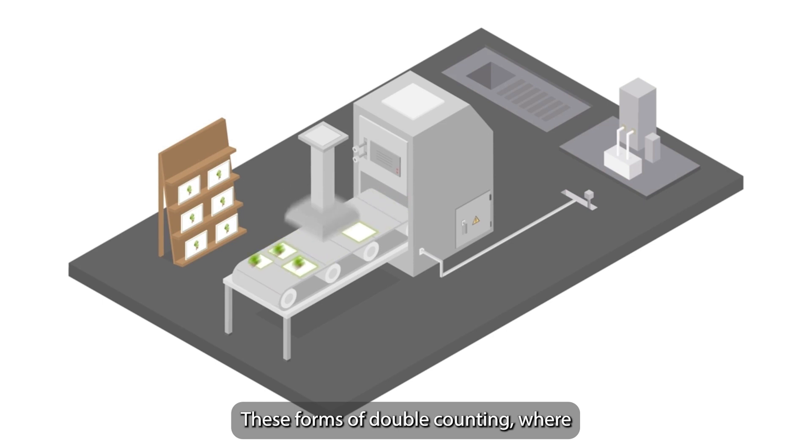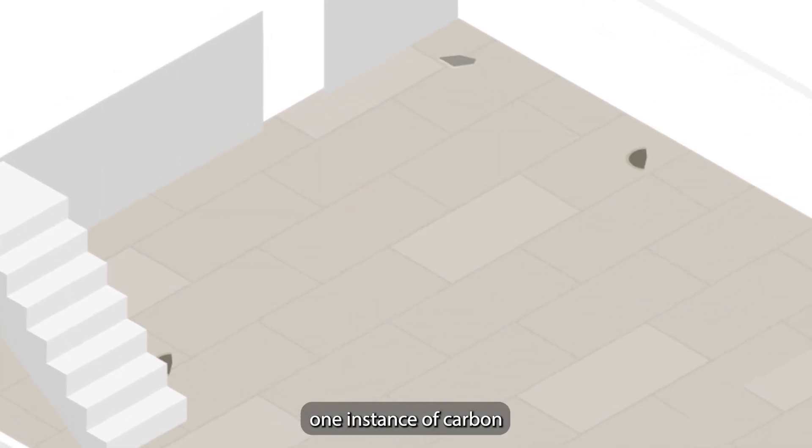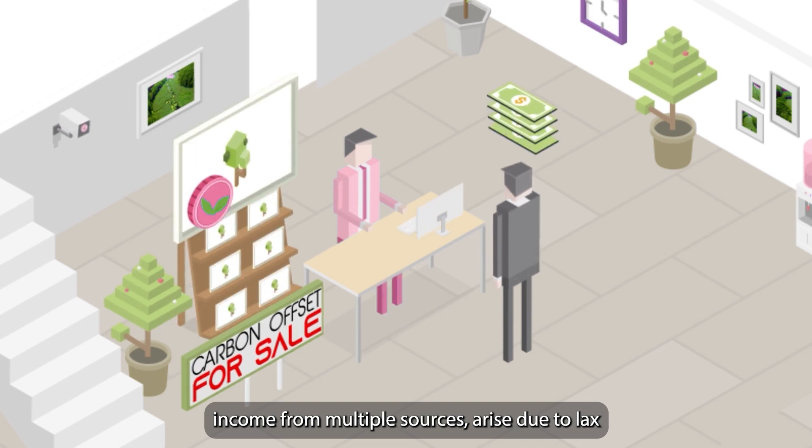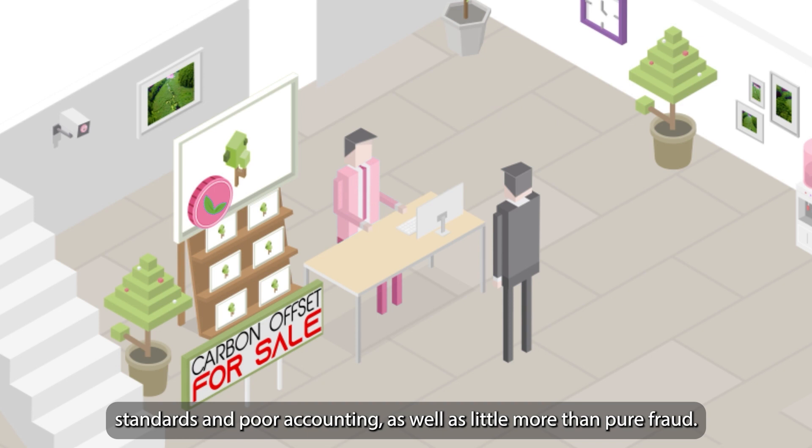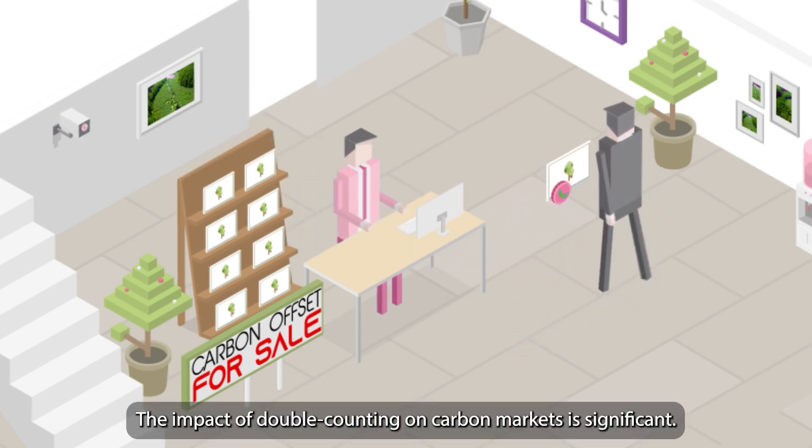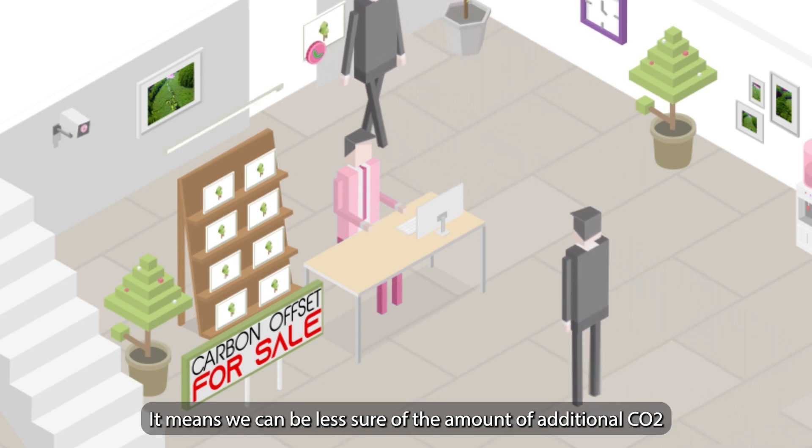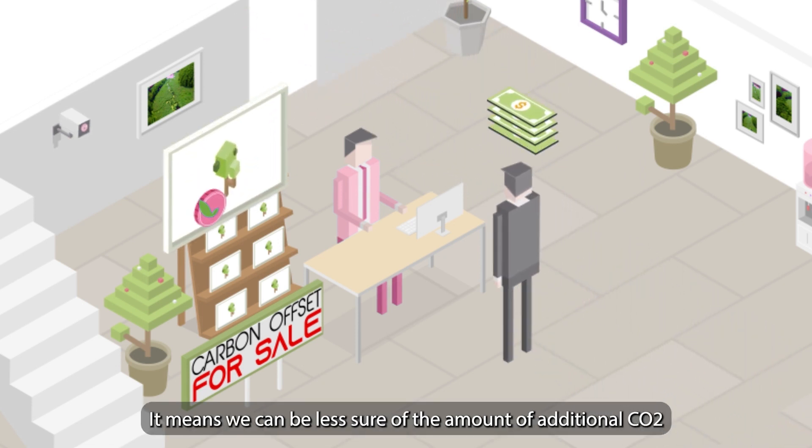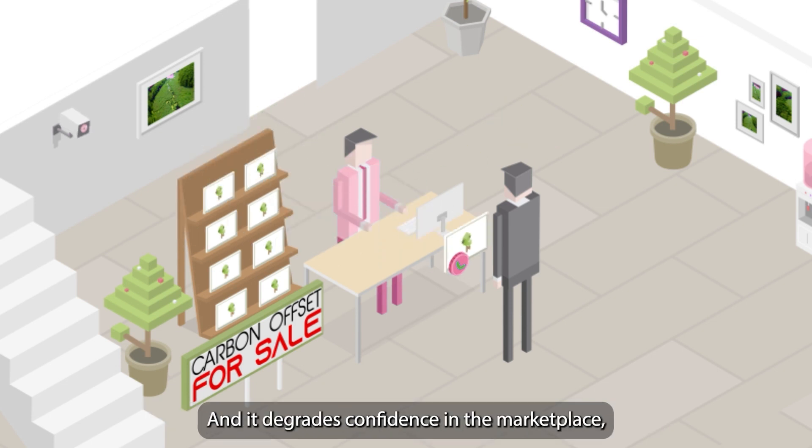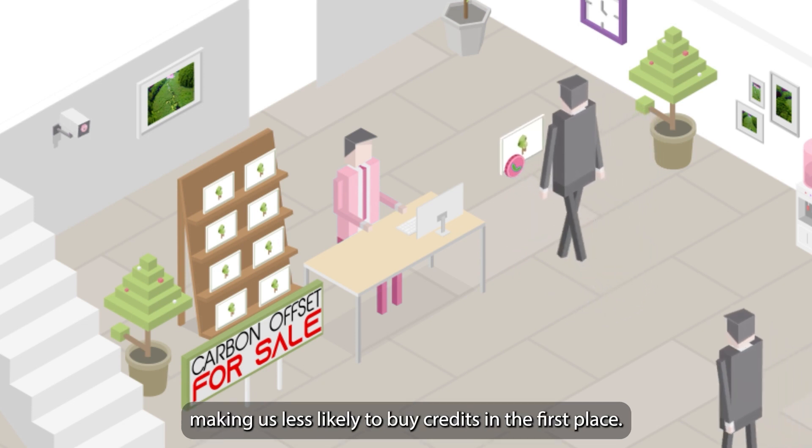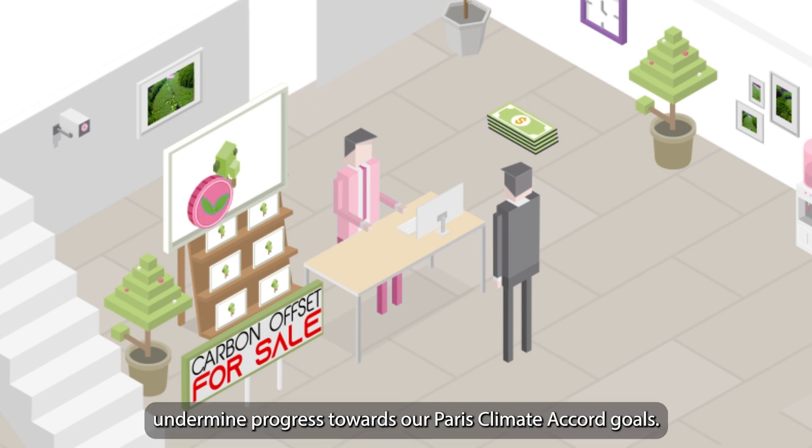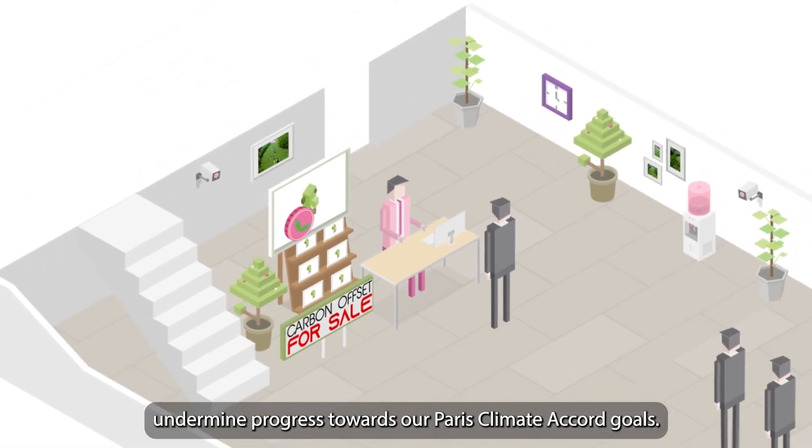These forms of double counting, where one instance of carbon reduction activity is used to generate income from multiple sources, arise due to lax standards and poor accounting, as well as little more than pure fraud. The impact of double counting on carbon markets is significant. It means we can be less sure of the amount of additional CO2 we have actually offset when we buy credits. And it degrades confidence in the marketplace, making us less likely to buy credits in the first place. Both of these impacts undermine progress towards our Paris Climate Accord goals.